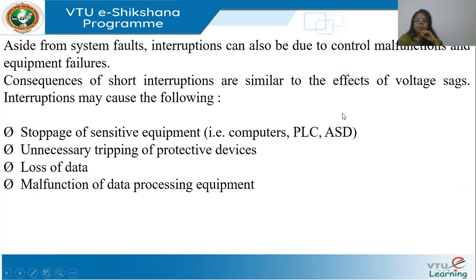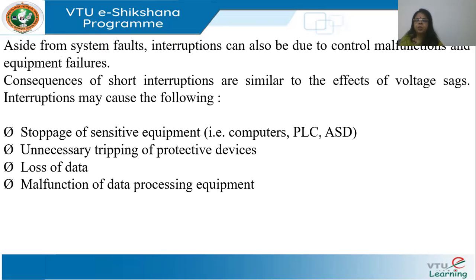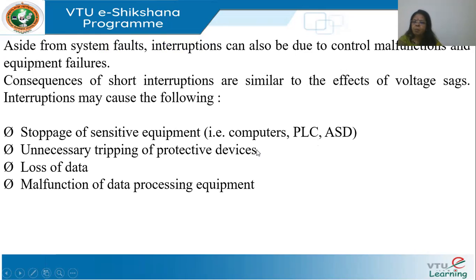Interruptions can also be caused by control malfunctions and equipment failures — for example, a relay protecting a motor may malfunction and trip the motor, which is also an interruption of supply. Effects similar to voltage sags include: computers and PLCs stopping, unnecessary tripping of protective devices, loss of data, and malfunction of data processing equipment.